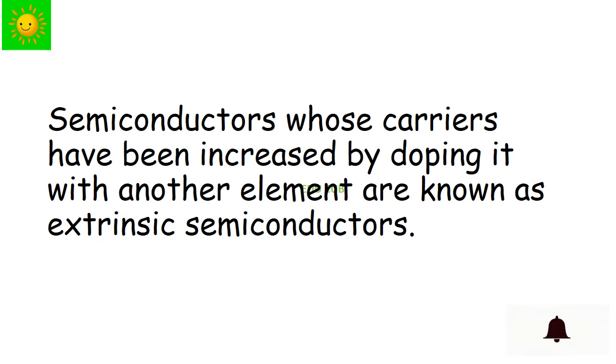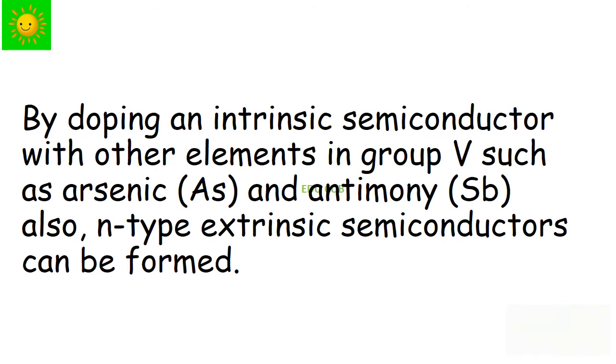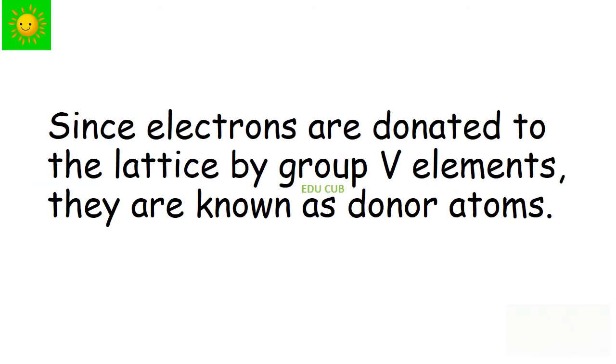Semiconductors whose carriers have been increased by doping it with another element are known as extrinsic semiconductors. By doping an intrinsic semiconductor with other elements in group 5 such as arsenic and antimony, also n-type extrinsic semiconductors can be formed. Since electrons are donated to the lattice by group 5 elements, they are known as donor atoms.